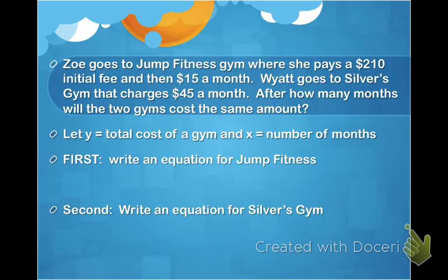So let's write Zoe's Gym first, which is Jump Fitness. So the total cost of Jump Fitness, which is y, is going to equal the $210 initial fee plus the $15 times every month. So that's our first equation.